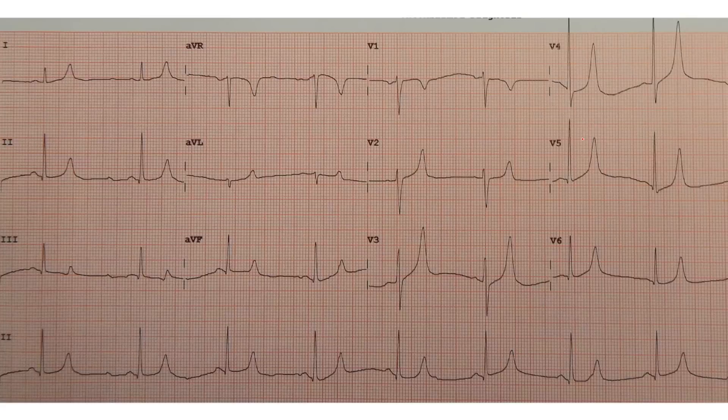This thing right here is a peaked T-wave, and notice you can see that it's almost the same height, or in some cases even higher, than the QRS complex. When you see something like that, you want to consider hyperkalemia, or an elevated potassium level.